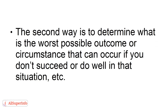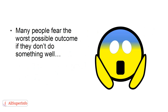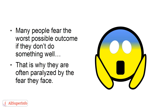The second way is to determine what is the worst possible outcome or circumstance that can occur if you don't succeed or do well in that situation. Many people fear the worst possible outcome if they don't do something well. That is why they are often paralyzed by the fear they face.